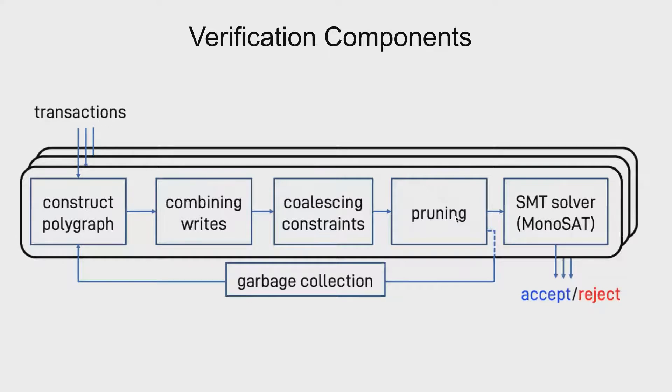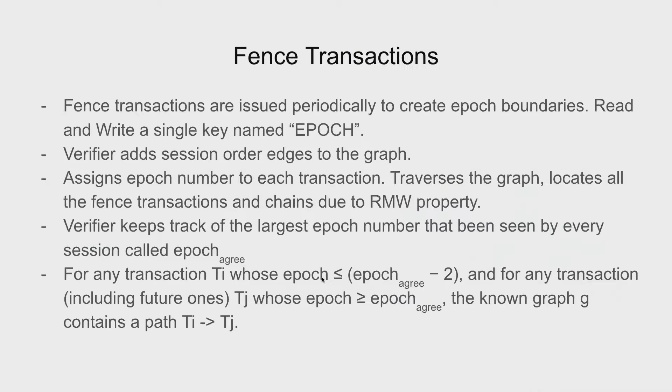Looking back to the verification components. We've gone over combining rights, coalescing constraints, and pruning. This is the pruning part that is done on parallel hardware. Before it is being sent to the SMT solver, Cobra regularly garbage collects all the transactions. So in this case, garbage collection means that whatever transactions are no longer applicable in our current graph, Cobra will discard them because we don't need one more transaction to increase our constraints in the system. For this Cobra employs fenced transactions.